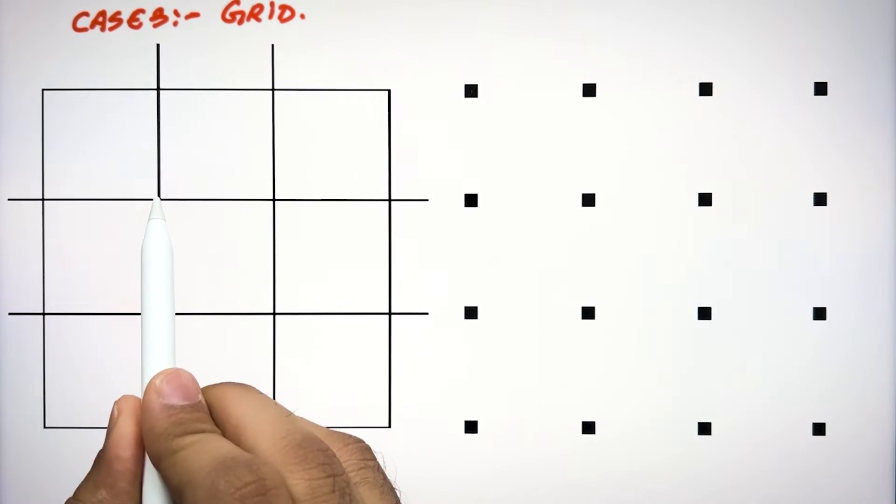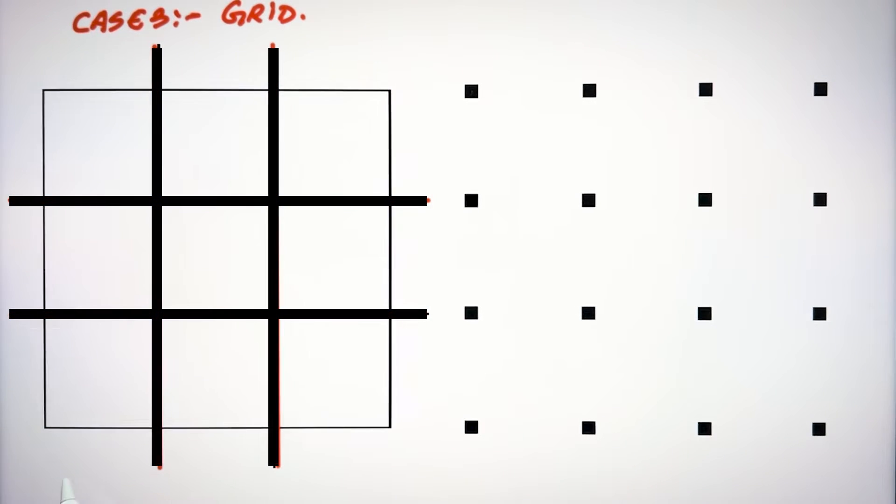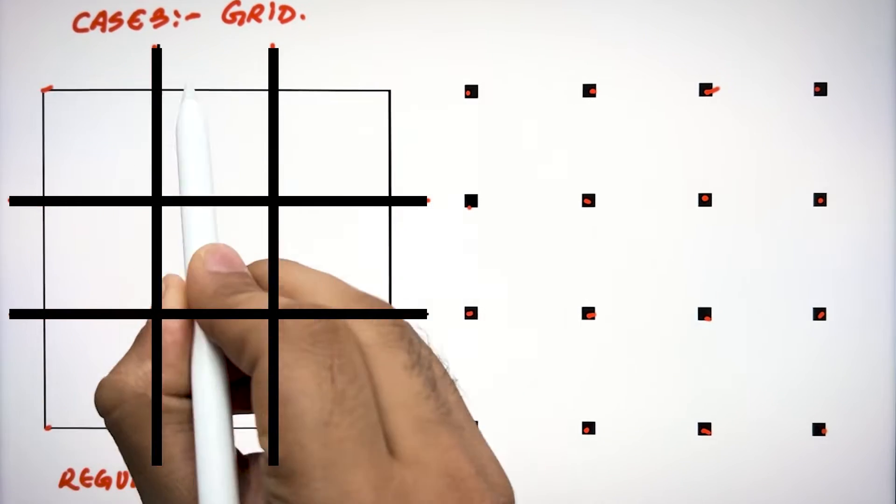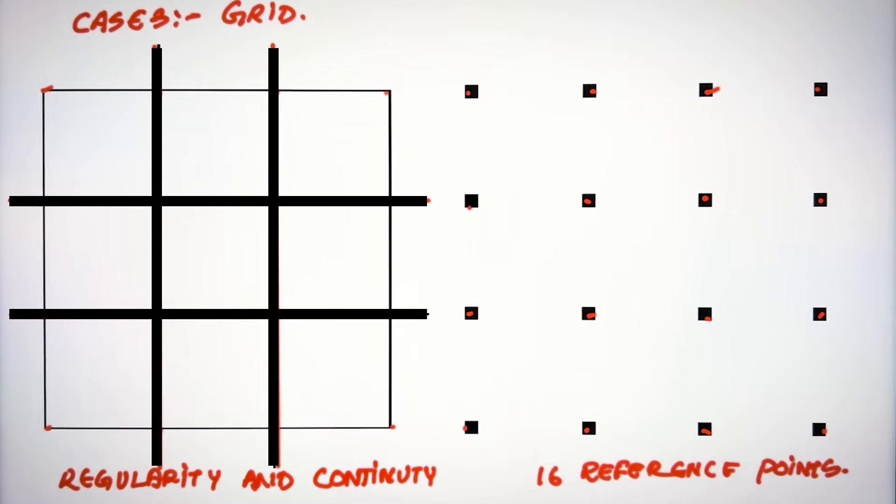The system of the grid shows the idea of organizational power, reflecting spaces with continuity and regularity, providing sixteen stable reference points. These grids possess properties of repetition and expansion.